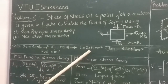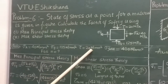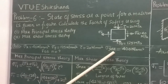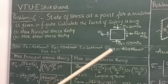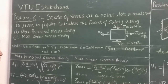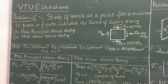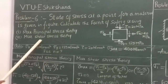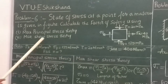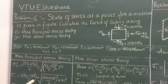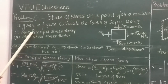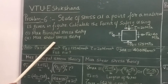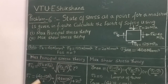Shear stress along the xy plane is 20 N/mm² and the yield stress for the material is 400 N/mm². We need to find the factor of safety for the design of the material. This is as per two theories: maximum principal stress theory and maximum shear stress theory.